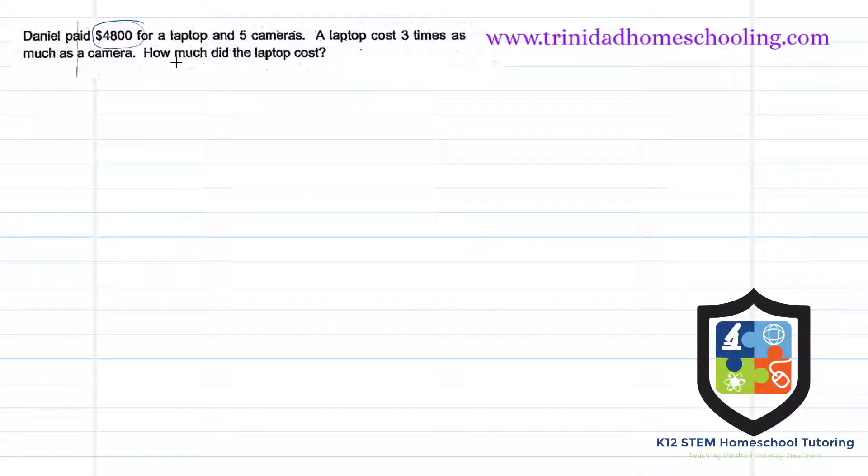And this is the cost for a laptop and five cameras. So we have laptop and we have cameras. He said he bought five cameras, all right, it's one, two, three, four, and five. He also bought one laptop.